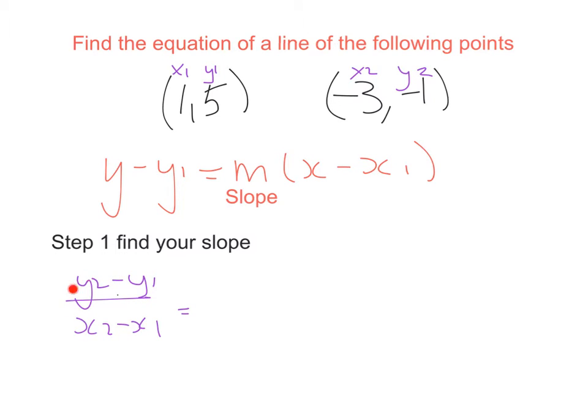So it is instead of writing y2 I write minus 1 minus y1 which is 5 all over. Instead of writing x2 I write minus 3 and then it's minus x1 which is minus 1. Break that down a little bit further and I get minus 6 all over minus 4 and you know yourselves that if you're multiplying or dividing and you have minus and a minus that that will give you a plus. So I can write that as 6 over 4 and I can make this a little bit easier on myself by saying well I can write that as 1 and a half.